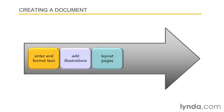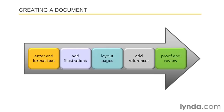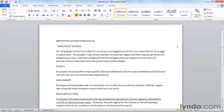With text and illustrations in place, users turn to how the document will look when it's printed, and begin working with layout elements — which could include headers and footers, margins, and portrait versus landscape orientation. References, if there are to be any, get added at this point, including things like a table of contents as well as footnotes and endnotes. Finally, the document is proofed or given to other people to review. We shouldn't be surprised that the ribbon tabs in Word mirror that process.